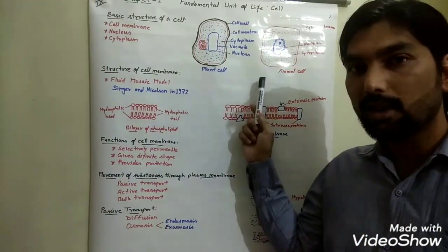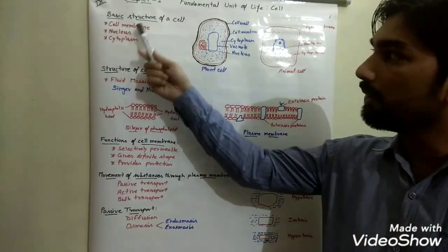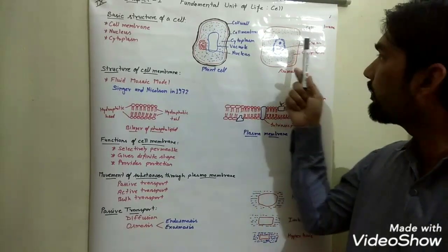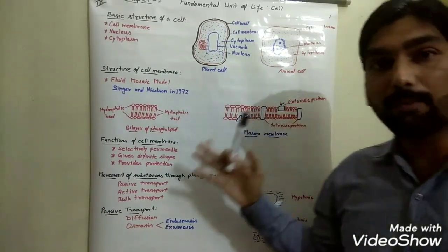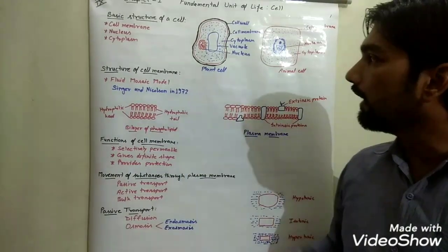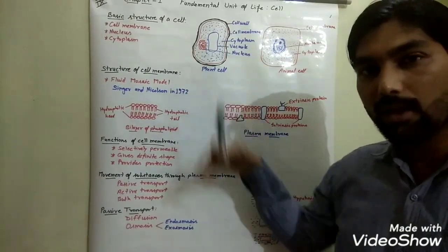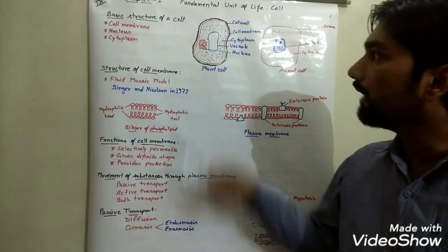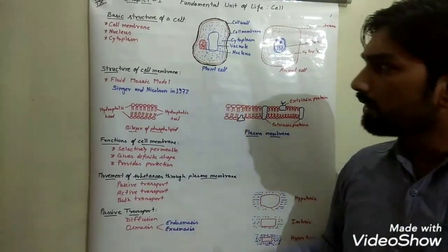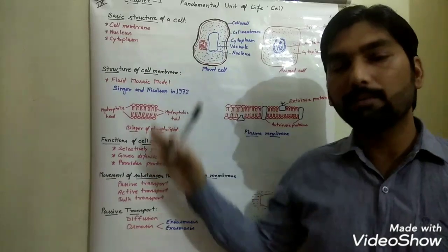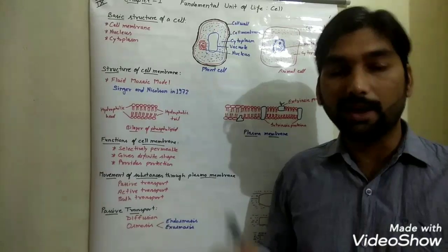Here you can see two different types of cell — plant cell and animal cell — and I have shown only these three basic features: cell membrane, nucleus, and cytoplasm. The basic difference between plant and animal cell is that in the plant cell one additional covering is present around the cell membrane, known as the cell wall, and it is made up of cellulose.